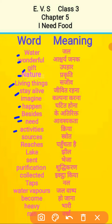Activity means kriya. Sources means srot. Reaches means pahunchna. Lake means jheel. Scent means beja. Purification means shudhikaran. Collected means ekhattah — ek jagah jamaa kia kisi cheez ko. Taps means nal.